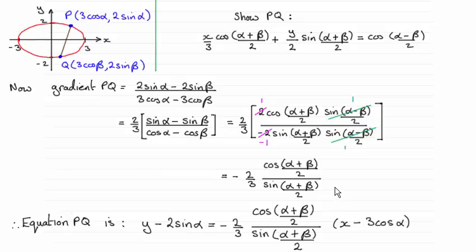And then to get the equation of the straight line PQ I just used this point here, P, for my x1 y1, and I substituted into the formula for a straight line: y minus y1 equals m the gradient times x minus x1.